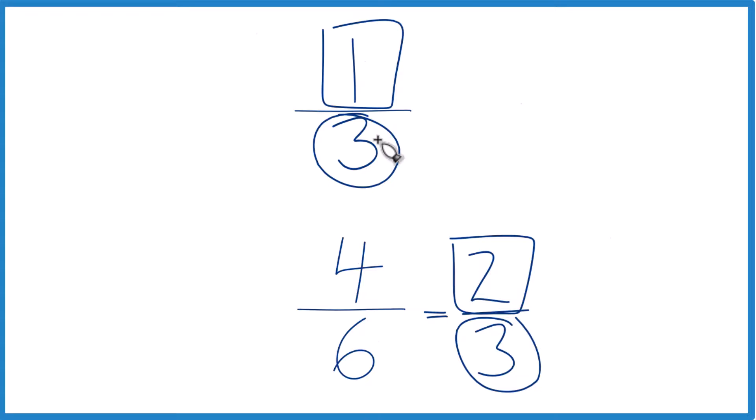So 2 3rds, that's greater than 1 3rd. And since these are equivalent fractions, they have the same value, they're just represented differently, 4 6ths is going to be greater than 1 3rd as well.